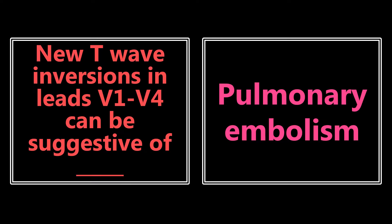New T-wave inversions in leads V1 to V4 can be suggestive of pulmonary embolism. There are a multitude of EKG changes that can be seen with PE. The most commonly discussed is S1Q3T3, but the most common overall is actually just sinus tachycardia — also really important to know. But new T-wave inversions in leads V1 to V4 on an EKG can also be suggestive of PE.